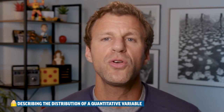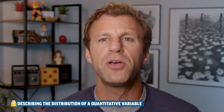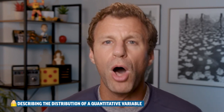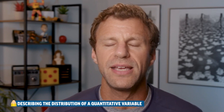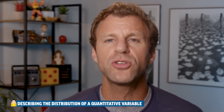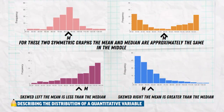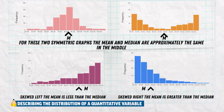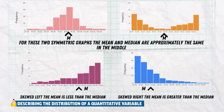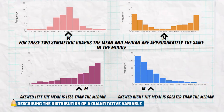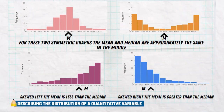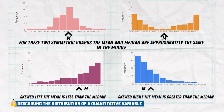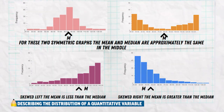When you are skewed to the left, the mean is going to be smaller than the median. When you're skewed to the right, the mean is going to be larger than the median. We can actually see this clearly in these four graphs. In the top two graphs, they're both symmetric — albeit in different ways — so the mean and the median are going to be about the same place. The arrow represents the mean and the M represents the median.